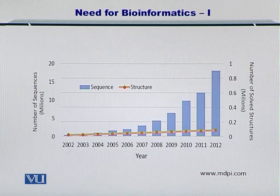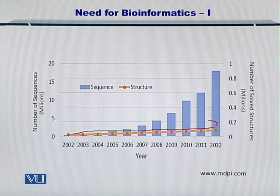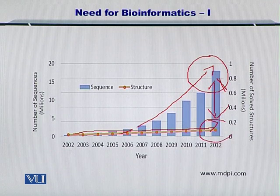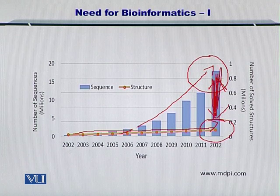Moreover, if you look carefully, the number of protein structures shown here in orange is actually different from the number of sequences. So there is a very big difference between the number of protein sequences that are known and the number of protein structures that are known. Using bioinformatics, we can also close this gap and try to find out the structures from the protein sequences. This is another job for the bioinformatician.